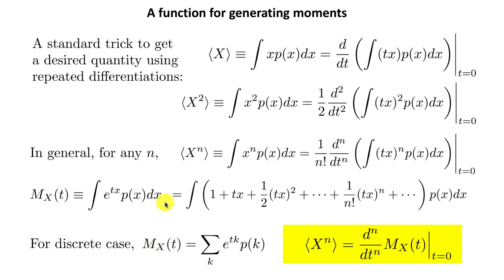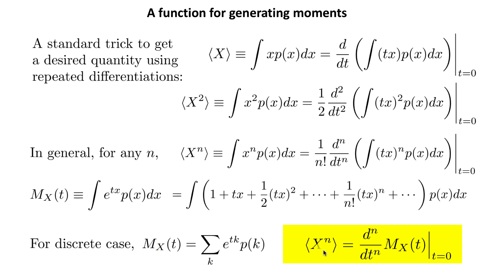For the discrete case, in which the random variable x takes only discrete values, you can also define the moment generating function in this way. Instead of integrating over all values of x, you simply sum over all values — in this case we call it k, so k goes over all integers. Again by taking derivatives of this we will get the nth moment.